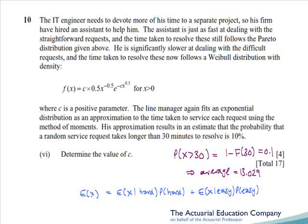The final part of this question does a similar thing, but this time with a Weibull distribution. We're told the probability it takes longer than 30 minutes is 10%, so we can use the CDF of this distribution. From this, you'll be able to get your exponential lambda again, and therefore work out the average as 13.029. Then we make use of Part 4b, where we say the mean is the mean given that it's a hard query, times the probability it's hard, plus the mean given that it's an easy query, times the probability it's easy, but for the hard queries, we'll be using the Weibull distribution. Which isn't too much bother, but obviously if you couldn't do it in the earlier parts, you won't be able to do it now.